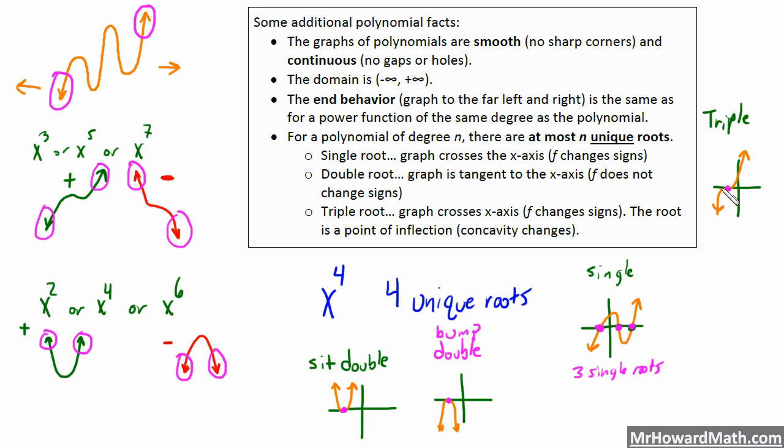Anytime you have a power of 3, that's going to be a triple root. And that is just like a cubic function where you have, by definition here, a graph crosses the x-axis. So it changes sign. F changes sign. It's negative y values here. It crosses. And now it's positive.